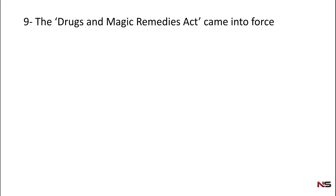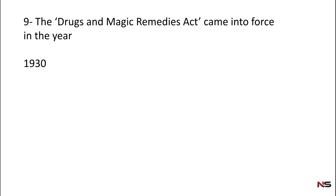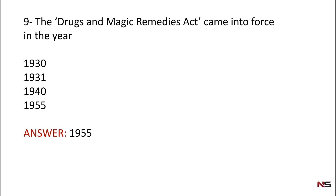Question number 9: the Drug and Magic Remedies Act came into force in which year? Options are: 1930, 1931, 1940, or 1955. The correct answer is 1955. If you wrote 1955, you will get plus 4 marks.